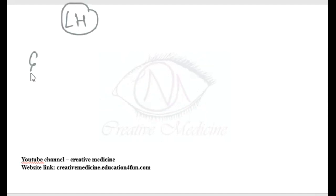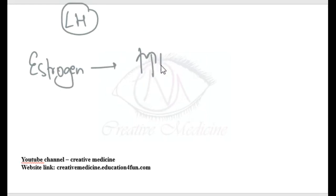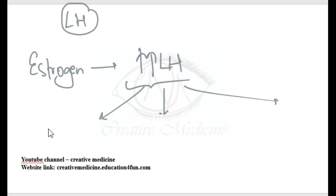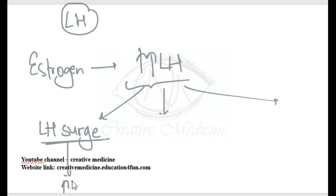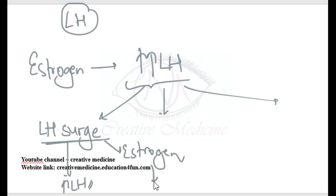Estrogen has a positive feedback on luteinizing hormone, which increases LH levels. This leads to an LH surge — a sudden increase in luteinizing hormone initiated by estrogen. The dose of estrogen required is 200 pg for 48 hours.